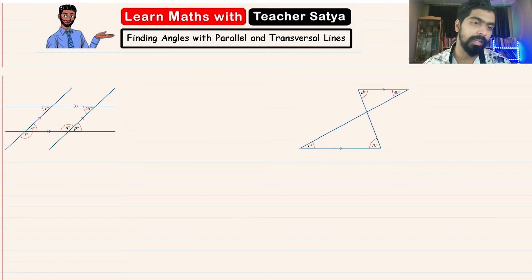Alright, so let's take a look at this question. By looking at this, we know that angle R is equal to 45 degrees because angle R is corresponding to this angle right here. So angle R is 45 degrees.